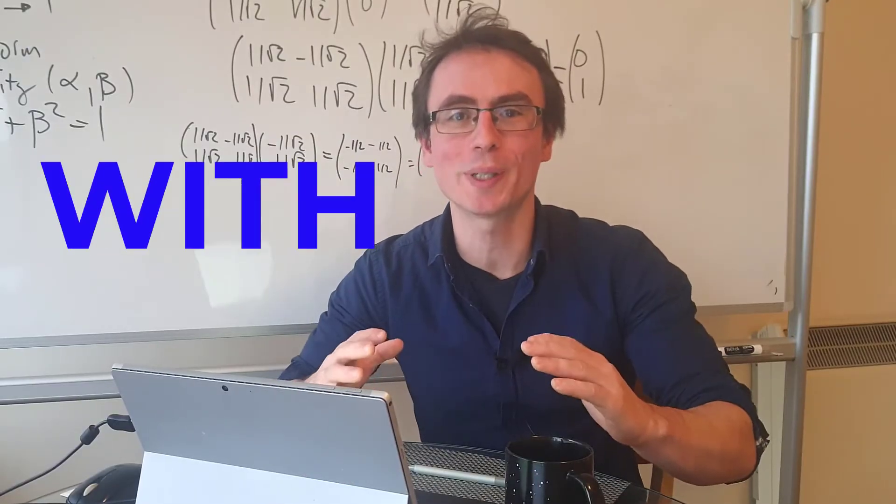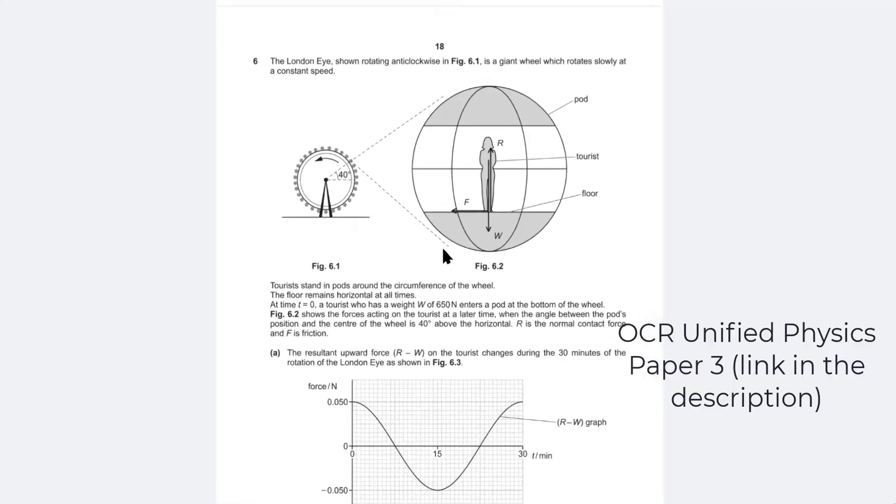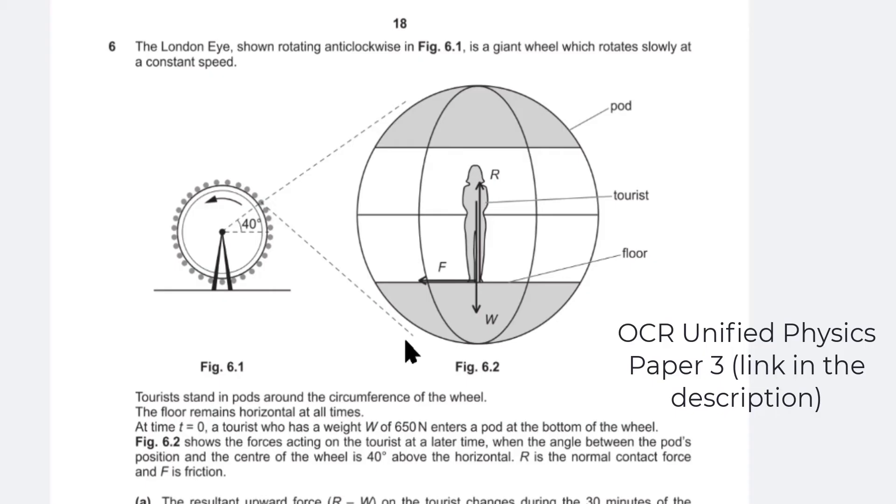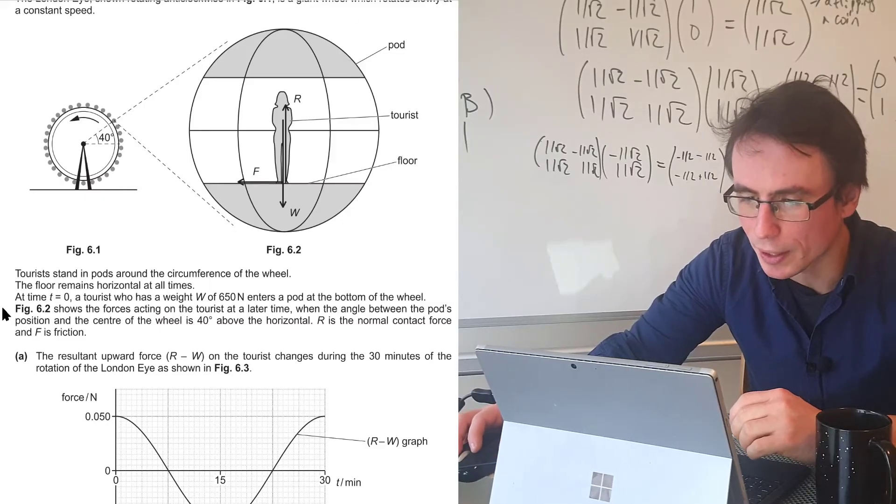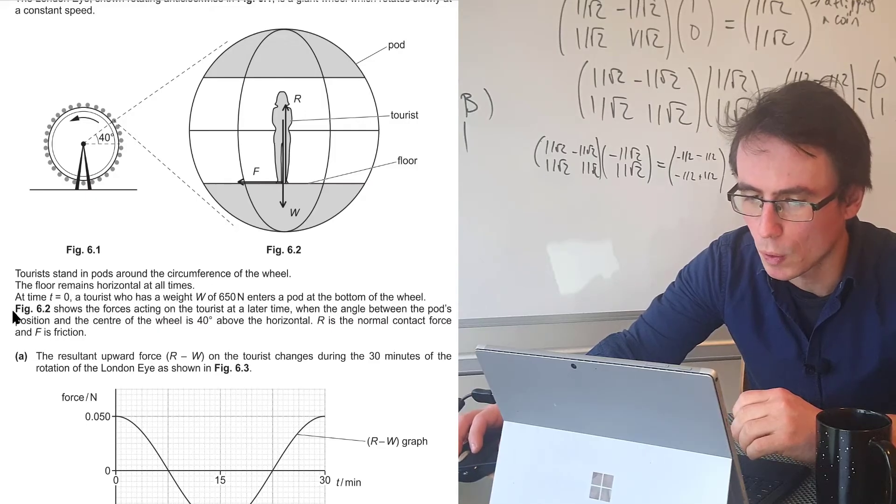Most physics students struggled with this A-level physics question. So we have the London Eye, which is rotating anticlockwise. We go in these pods and the floor remains horizontal at all times.